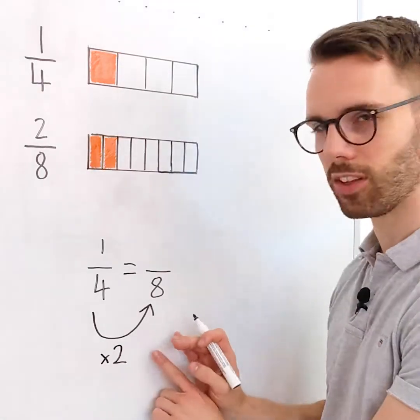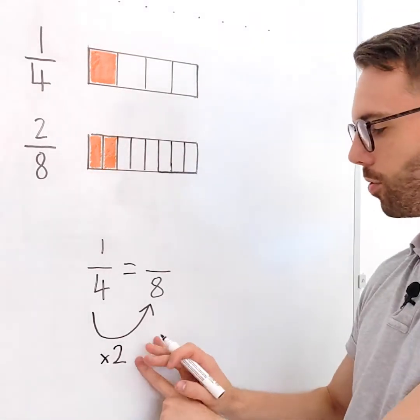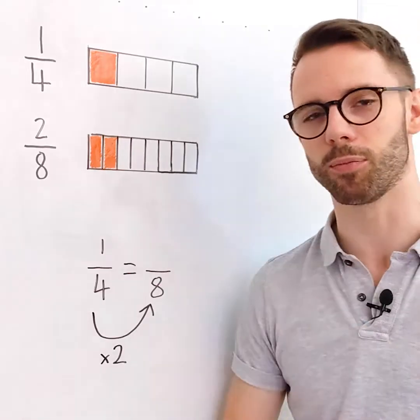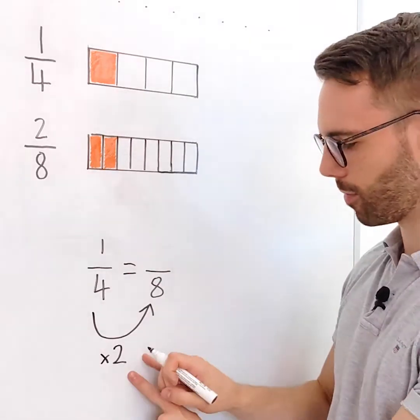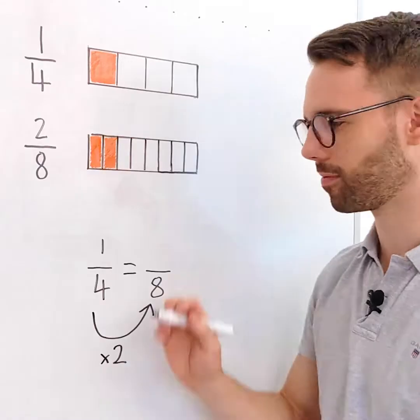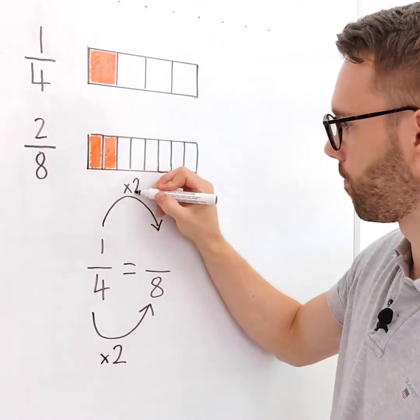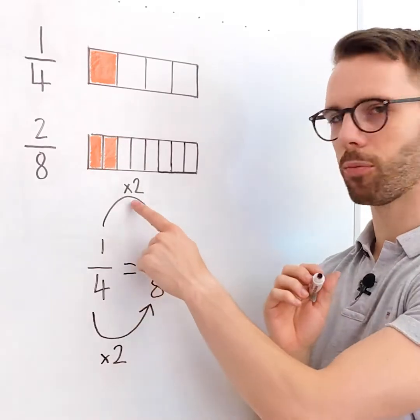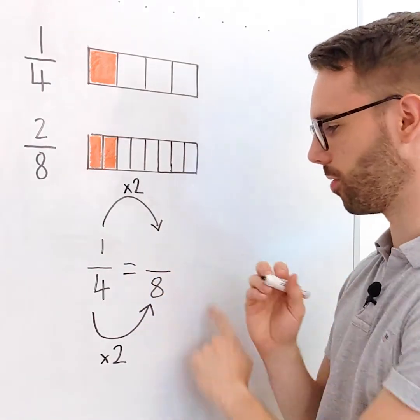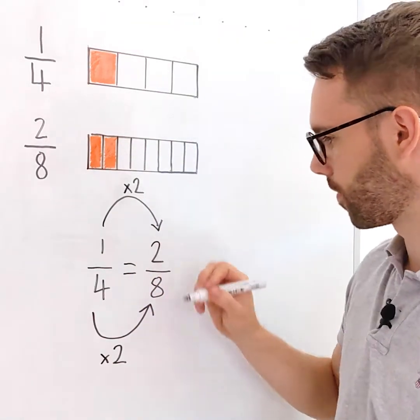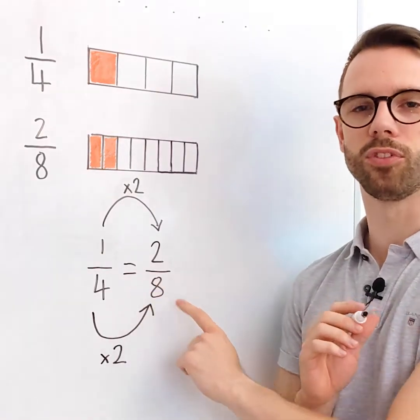Whatever I do to the denominator at the bottom, I need to also do to the numerator to keep it proportional. I times this by two, so I'm going to times the numerator by two. One times two is two. One quarter equals two eighths.